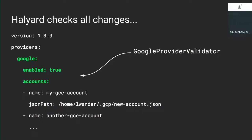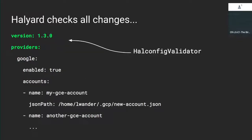You go up and validate the Google provider, validate any bakery edits you may have made, and pass the node validator. This keeps going until you've walked all the way up to the top of your hal-config, making sure that anything possibly affected by this edit will still work after you redeploy Spinnaker.